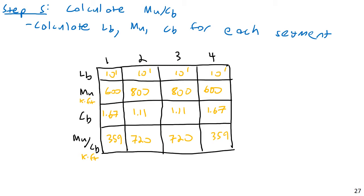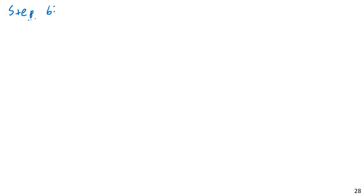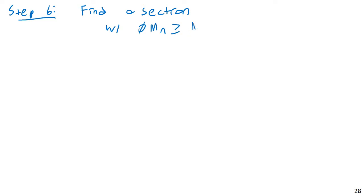Step 6: find a section where phi_M_n is greater than or equal to M_u over C_b, but with C_b equal to 1.0. I'll use Table 3-10, which lists W shapes by unbraced length. This table uses C_b of 1.0, so we use the M_u/C_b ratio to select our initial size, and then we'll check everything.